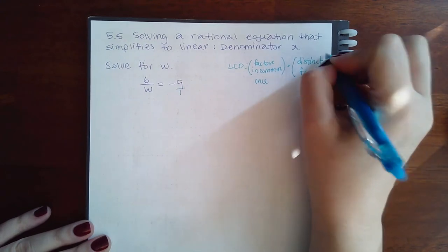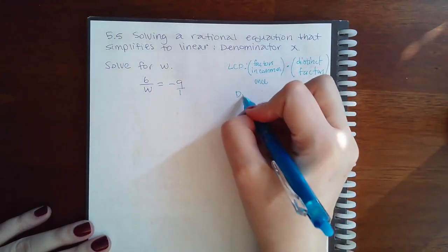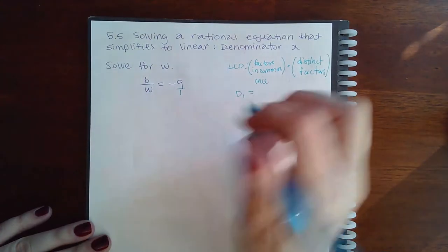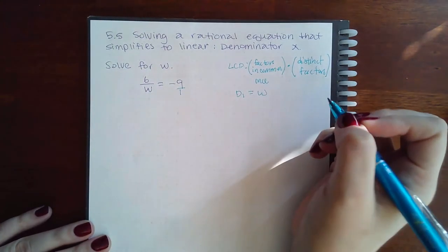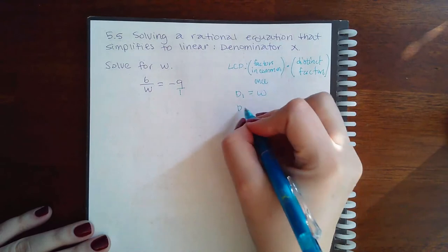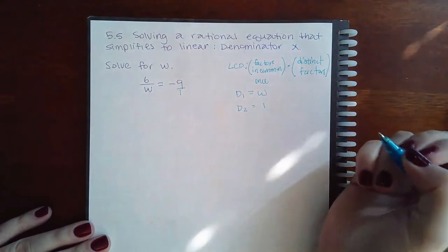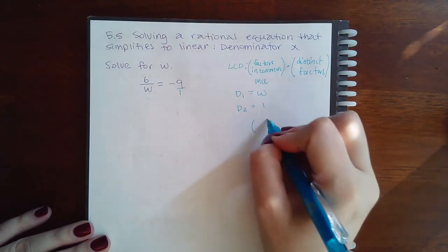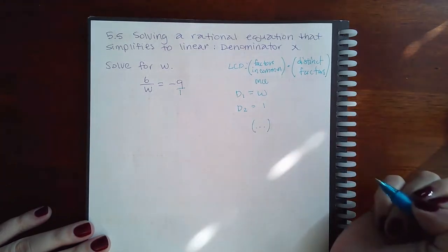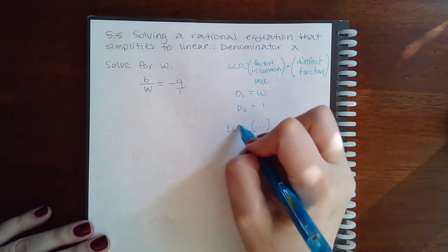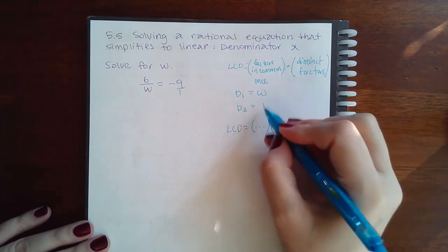So if we look at denominator 1, which is this denominator, we have w. If we look at denominator 2, we have 1. They do not have anything in common. However, they do have distinct factors.